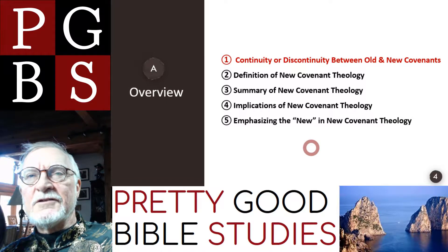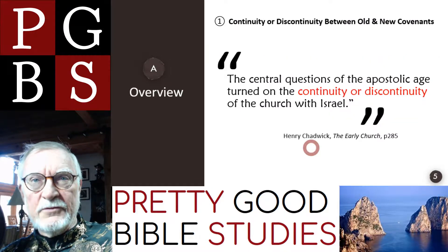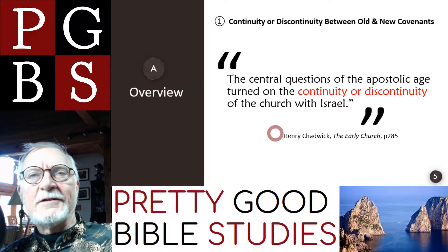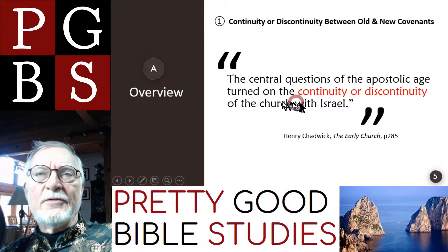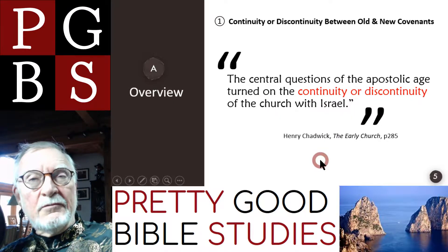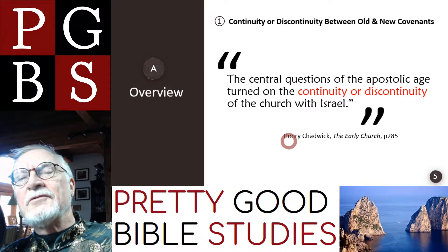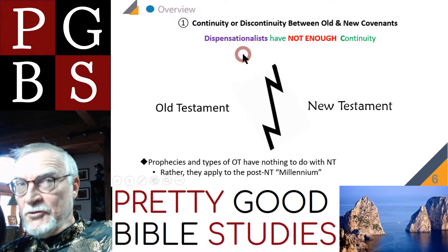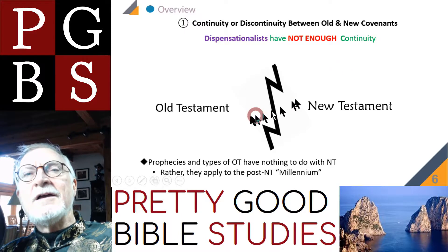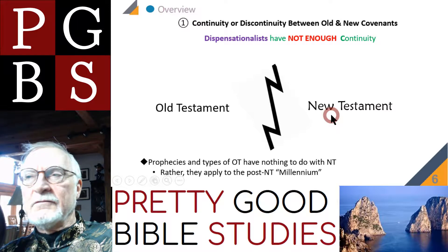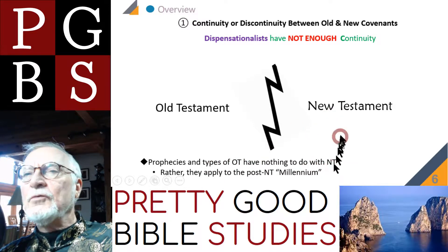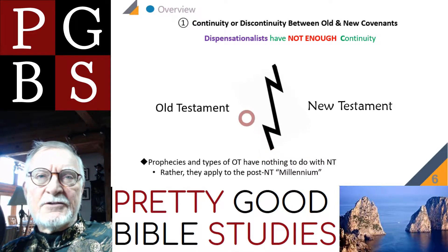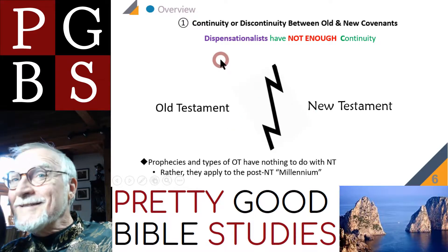Let's start with the question of continuity or discontinuity between the old and new covenants. This is a quote from Henry Chadwick, his famous little volume on the early church: 'The central questions of the apostolic age turned on the continuity or discontinuity of the church with Israel.' That issue is still with us today, 2,000 years later. From a New Covenant Theology point of view, dispensationalists do not have enough continuity. They take the Old Testament and put a big gap between it and the New Testament, saying those prophecies refer not to the New Testament but to the post-New Testament millennium.